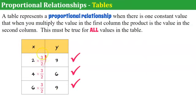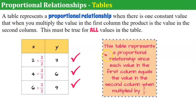This seems daunting to come up with the value 3/2, but I'm going to show you in a minute how to do this very easily. This table represents a proportional relationship since each value in the first column equals the value in the second column when multiplied by 3/2.